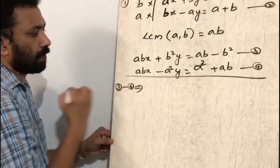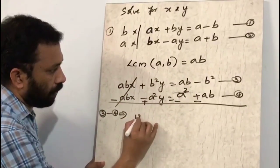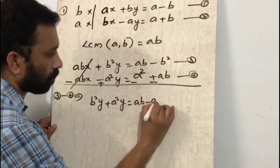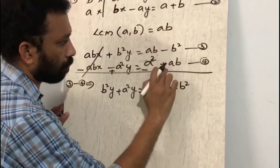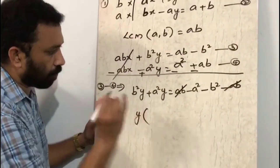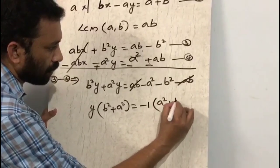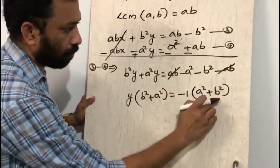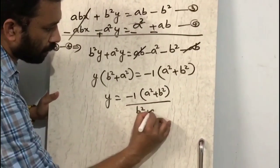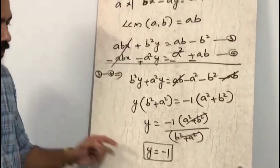Subtracting equation 4 from equation 3: the abx terms cancel. We get b²y + a²y = ab - b² - a² - ab. The ab and -ab cancel, leaving y(b² + a²) = -(a² + b²). Taking -1 common: y(a² + b²) = -1 × (a² + b²). Dividing both sides by (a² + b²), y = -1.